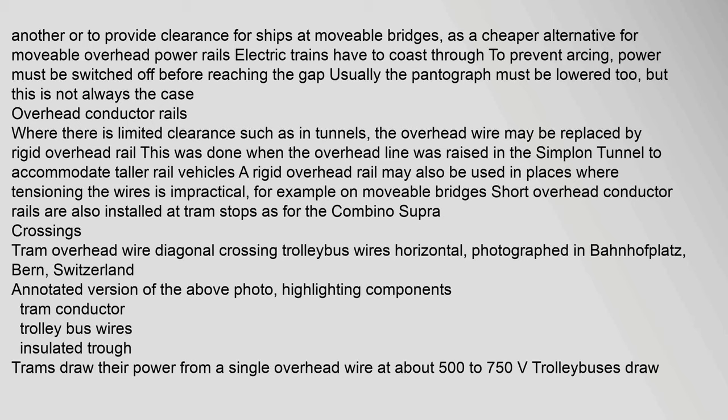Where there is limited clearance, such as in tunnels, the overhead wire may be replaced by a rigid overhead rail. This was done when the overhead line was raised in the Simplon tunnel to accommodate taller rail vehicles. A rigid overhead rail may also be used where tensioning the wires is impractical, for example on movable bridges. Short overhead conductor rails are also installed at tram stops.